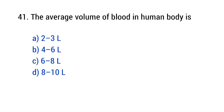Question number 41: The average volume of blood in the human body is? The right answer is option B — 4 to 6 liters.